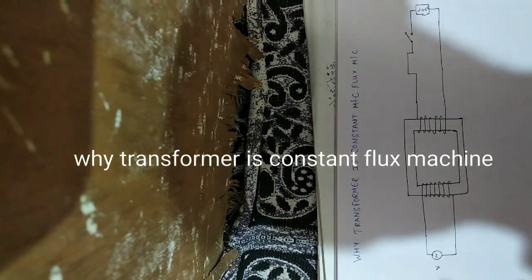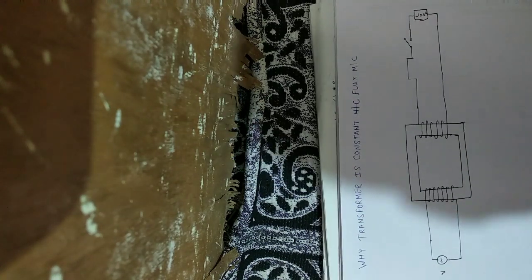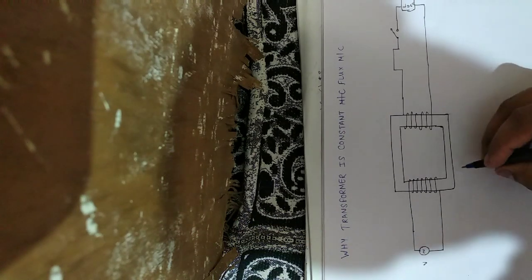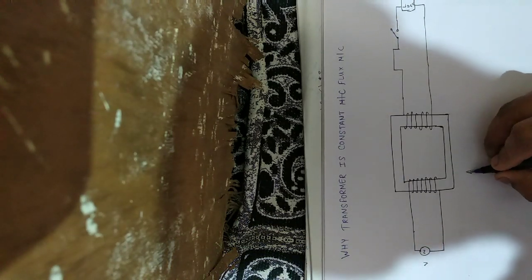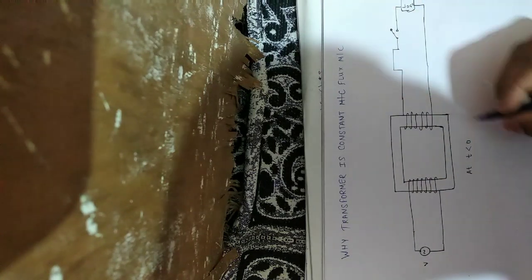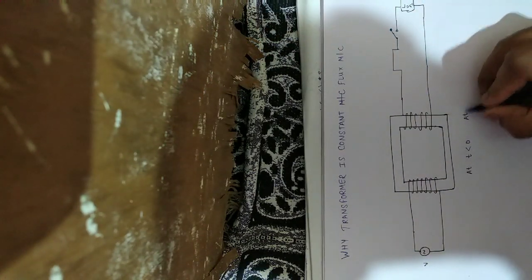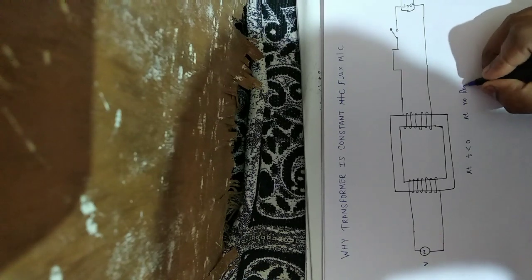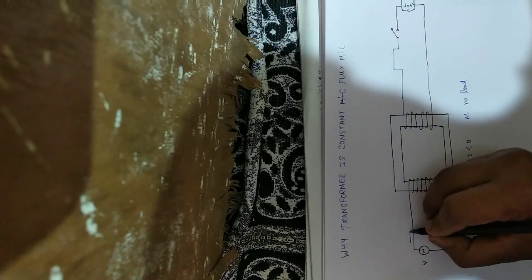Very good question: why is a transformer a constant flux machine? First of all, at t less than zero, this switch is open, meaning it is at no load. So current i0 is flowing, the no load current.